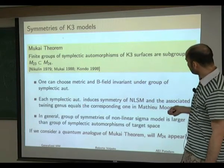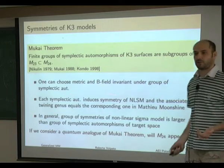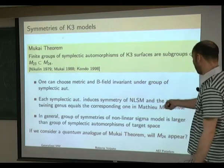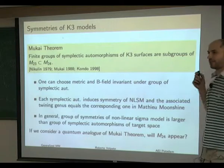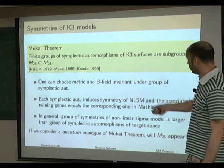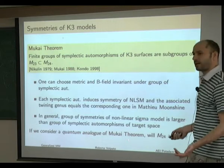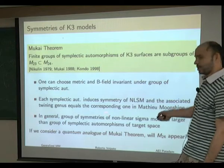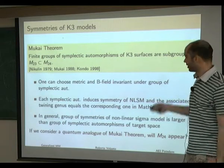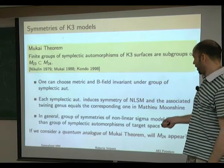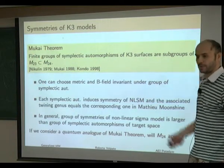In general, the group of symmetries of nonlinear sigma models can be larger than just the symmetries induced by geometric symplectic automorphisms. When Mathieu Moonshine emerged, it was natural to conjecture that one could extend this Mukai theorem — a quantum analog of Mukai's theorem — for classifying groups of symmetries of nonlinear sigma models. The expectation was that in this quantum analog, instead of M23, one would find M24.